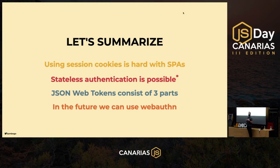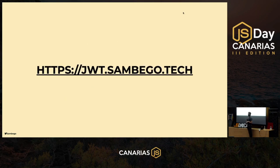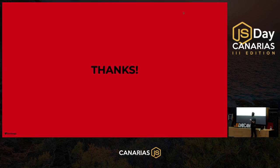To summarize: using session cookies is very hard with single page applications, mainly due to CORS. Stateless authentication is possible with JSON web tokens — with some caveats around blacklists and security. JWTs consist of three parts: the header (what it is), the payload (claims for API use or identity), and the signature (to verify content integrity). In the future, WebAuthn lets us log in without passwords. Resources: jwt.io, webauthn.me, a blog post on why the IETF recommends PKCE over implicit flow, and slides at jwt.sumbiga.tech.